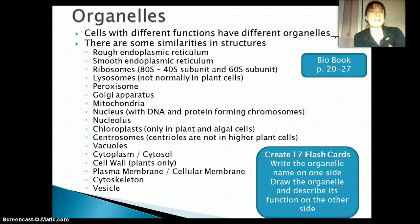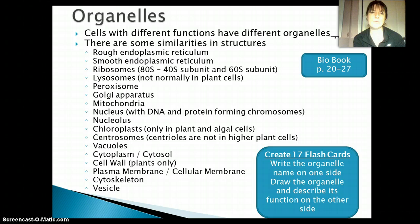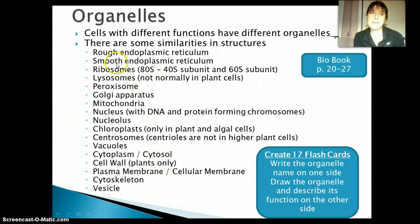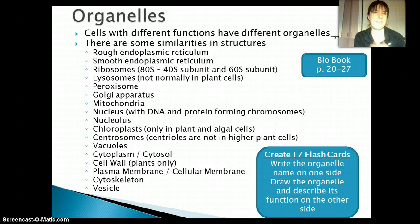There are going to be a lot of different organelles inside eukaryotic cells, and they're all going to have different functions. I'm not going to go through each one right now — instead, we're going to use a couple of different resources. We're going to look in the IB biobook, pages 20 to 27. One of the best ways to learn these is to create flashcards — write down each of the 17 different terms, put the name on one side, and on the other side put the function and draw a little picture of what it looks like, then practice with those.